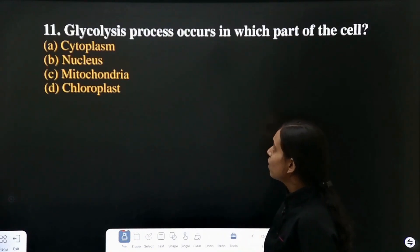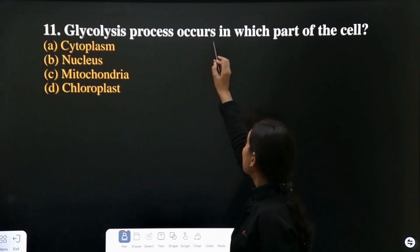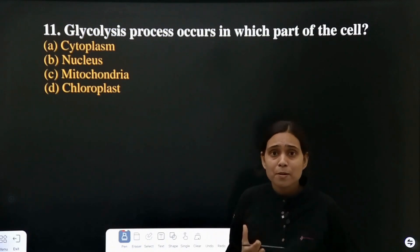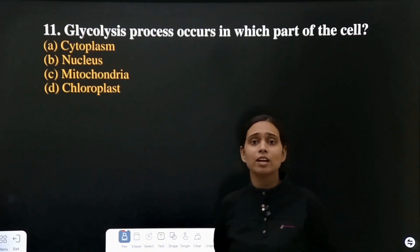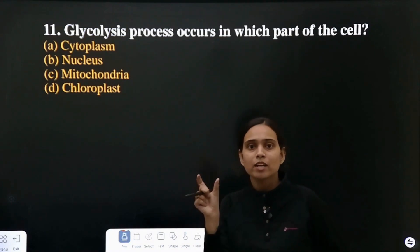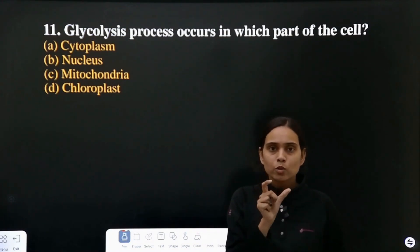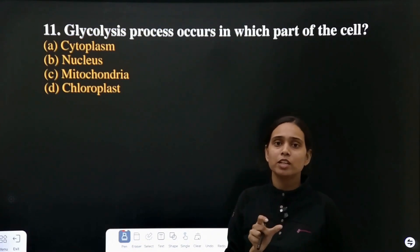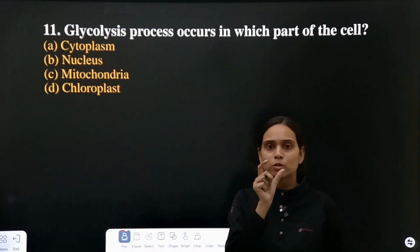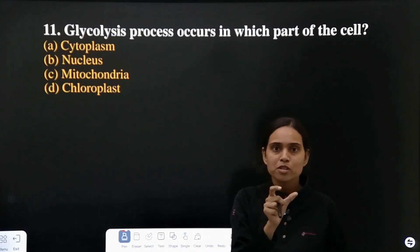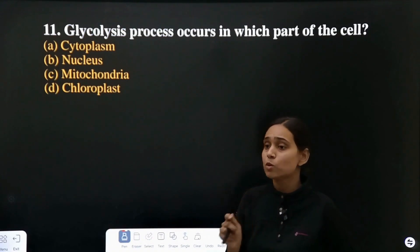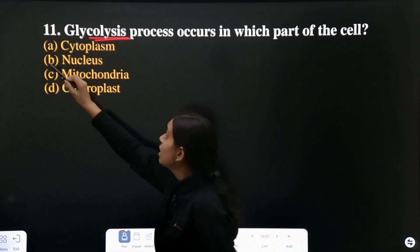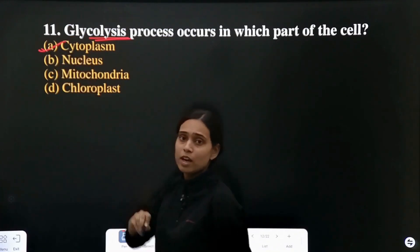Question number 11: glycolysis process occurs in which part of the cell? Where does glycolysis take place? Glucose is converted into pyruvate through the process known as glycolysis. And this glycolysis — where does it take place? It takes place in the cytoplasm.